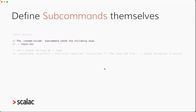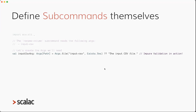RenameColumn also requires an argument — an unnamed parameter — which will be the input CSV file. You use the Args data type from ZIO CLI, defining this argument as a file. You provide a name like 'input-csv' — which is just for documentation purposes, the user won't need to write it when executing the CLI. And here I'm requiring the file to exist, which is an example of impure validation in action — it's an interaction with the outside world.